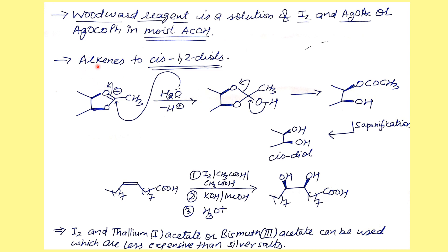What is the advantage of Woodward reagent? You end up getting cis-diol starting from the alkenes. This is the intermediate that forms in both cases, in Prevost dihydroxylation as well as Woodward dihydroxylation.